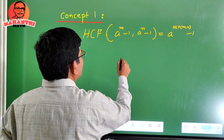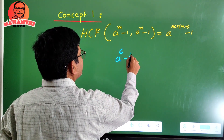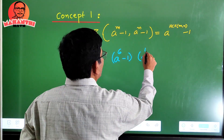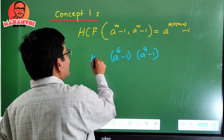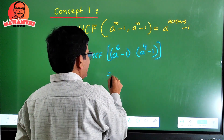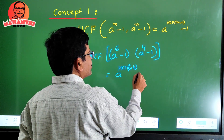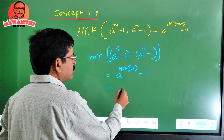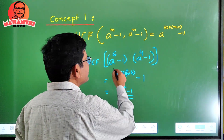For example, take two numbers: a^6 - 1 and a^4 - 1. The HCF of these two numbers is a^(HCF(6,4)) - 1. Since HCF of 6 and 4 is 2, the answer is a^2 - 1.